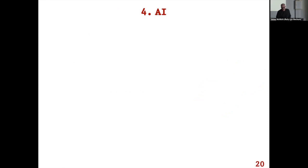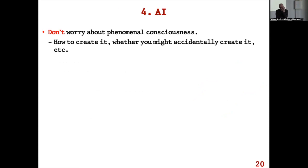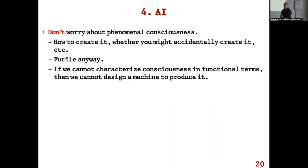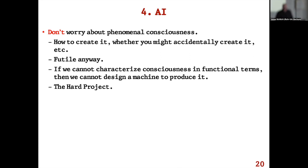AI: the morals here are fairly similar. Don't worry about phenomenal consciousness at all. Don't try to think about how you could create it, don't worry about whether you might accidentally create it, or whether it might create itself spontaneously. I think it's futile — the idea of creating it is futile. If we characterize phenomenal consciousness, we can't characterize it in functional terms in the way that lets you design a machine to produce it. You can't draw a blueprint for that: you can't build something you have no idea how to build and couldn't determine if you had built.